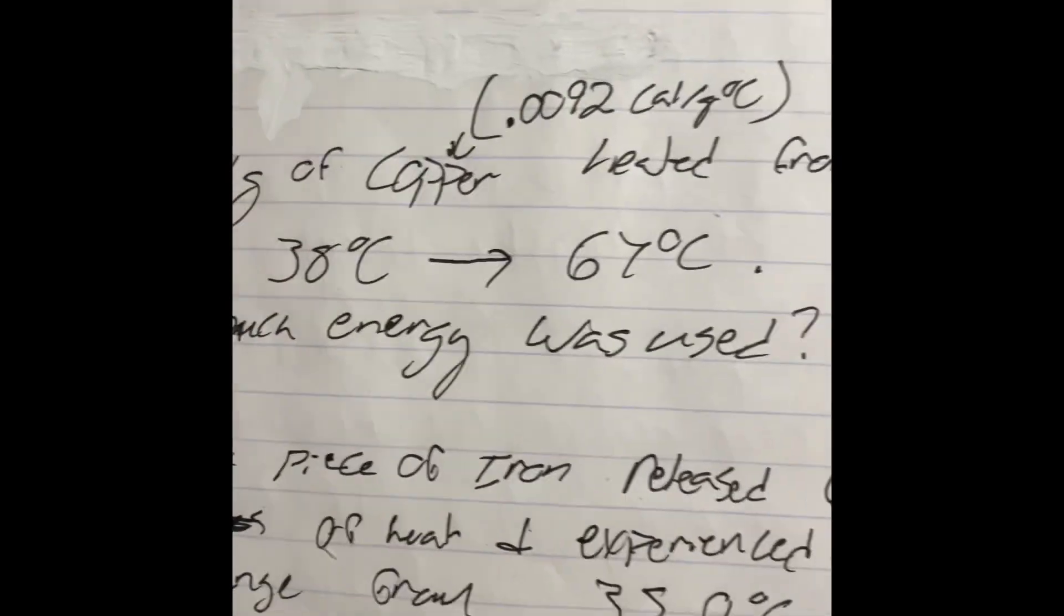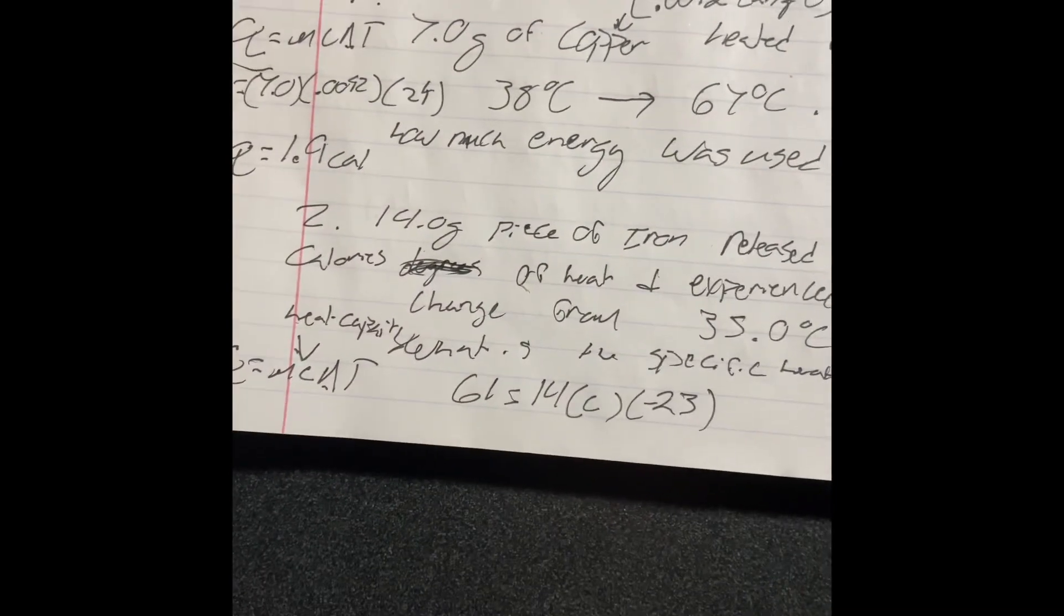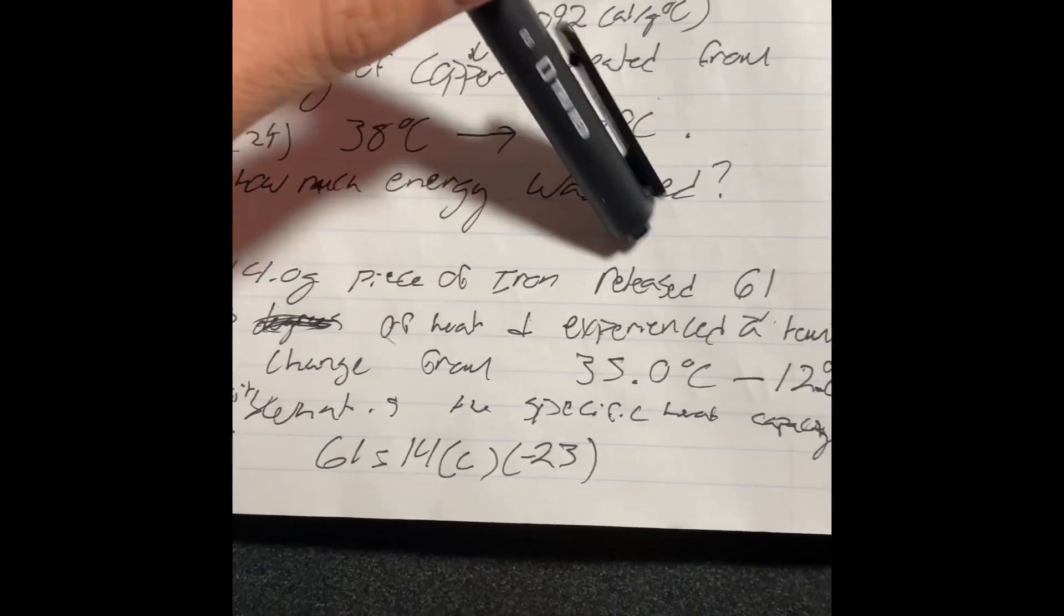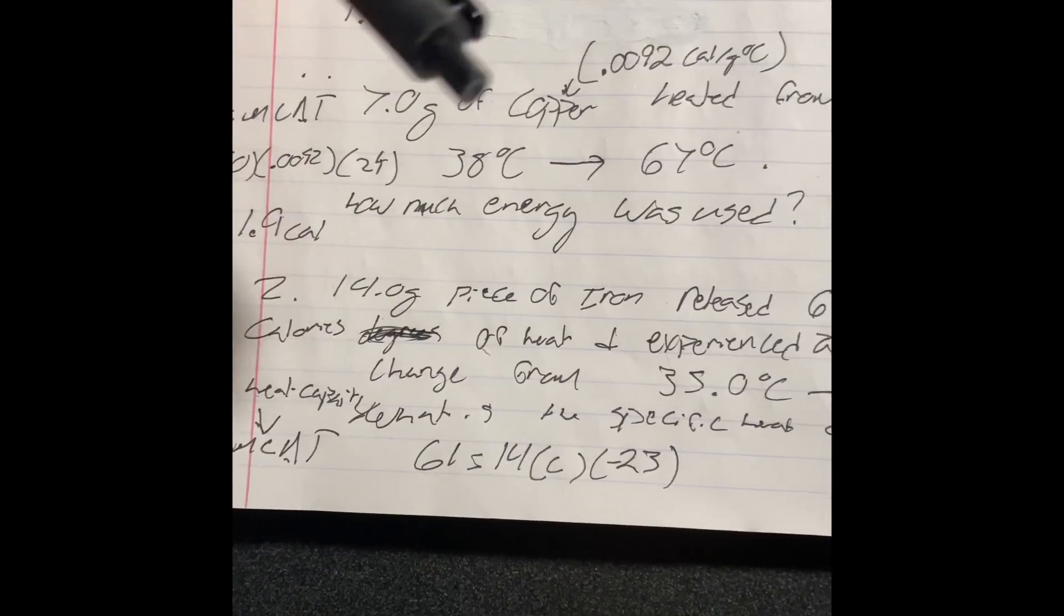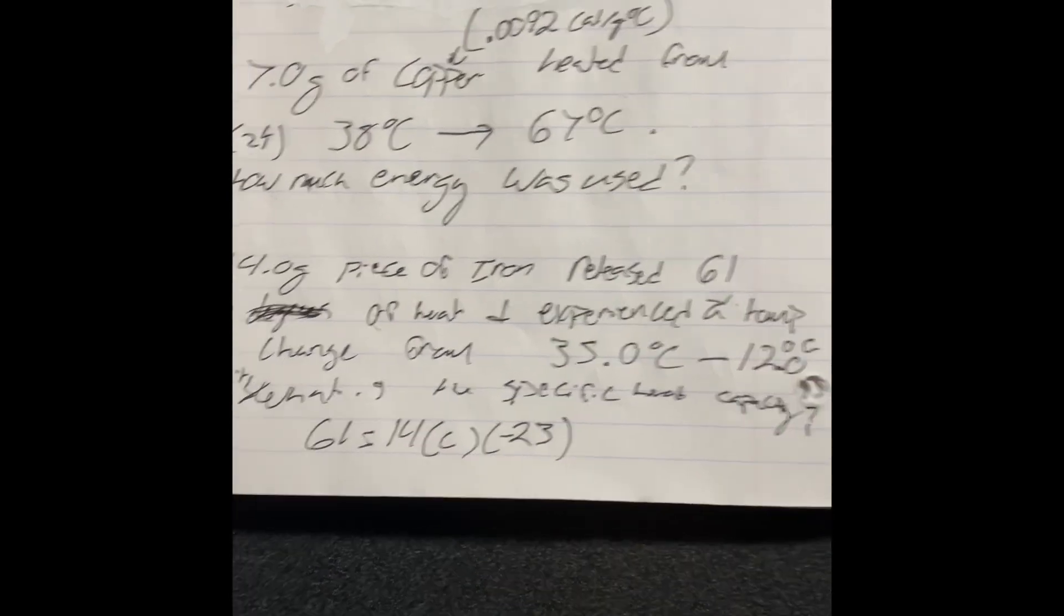All of these formulas are basically going to be the same thing, just plug and chug. But, I have another problem here. A 14 gram piece of iron released 61 calories of heat and experienced a temperature change from 35 to 12 degrees Celsius.